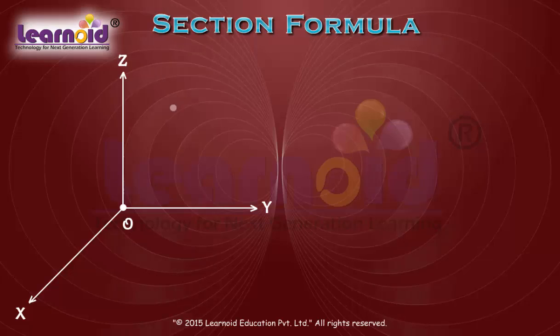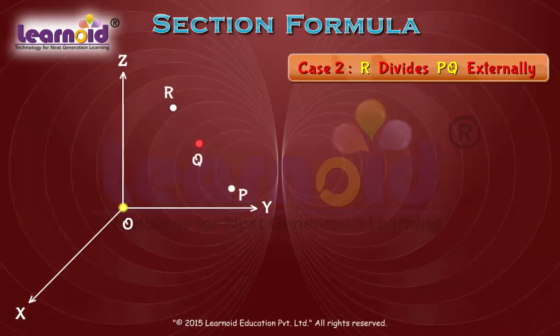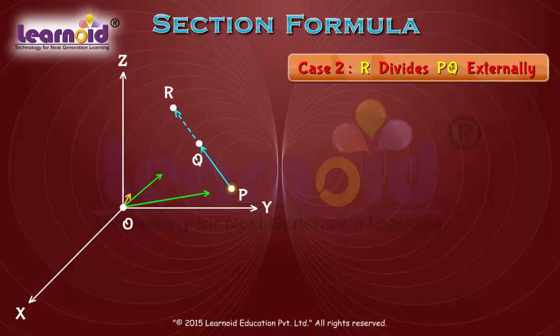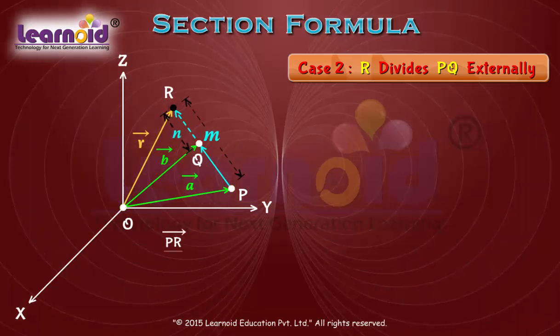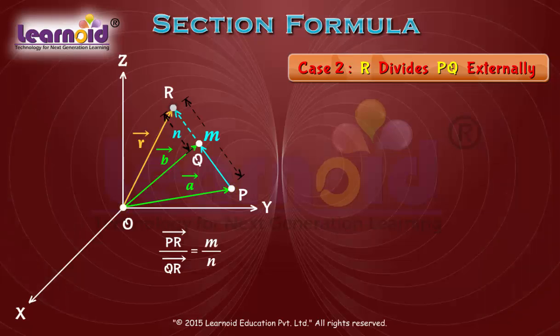Let R divide the line segment PQ externally, which means point R does not lie between PQ. Point R lies on the line PQ extended further such that PR by QR is equal to m by n. Or we can write n PR vector is equal to m QR vector.